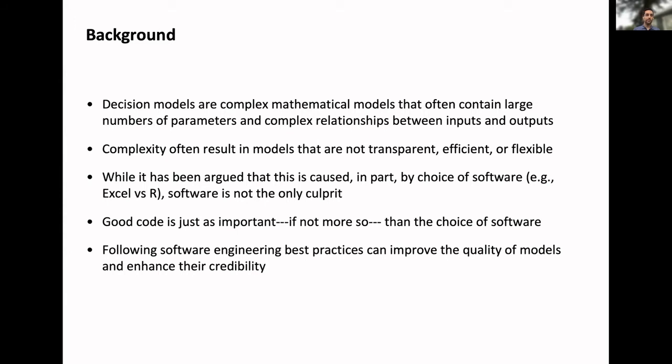As everyone knows, decision models can be quite complex. They often have large numbers of parameters and complex relationships between inputs and outputs. Because of that, as well as other reasons, sometimes models may not be transparent, efficient, or flexible. Especially the transparency angle can diminish their perceived credibility. While it has often been argued, including by me, that part of this is due to the choice of software, like Excel versus R, I would say that software is not actually the only culprit.